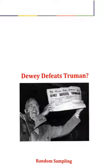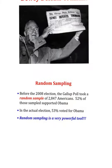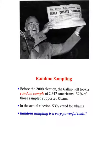However, in a different poll back in 2008, 2,847 Americans were polled and 52% of them supported Obama. In the actual election, 53% voted for Obama. So this was actually a very good sample, and random sampling can be a very powerful tool.